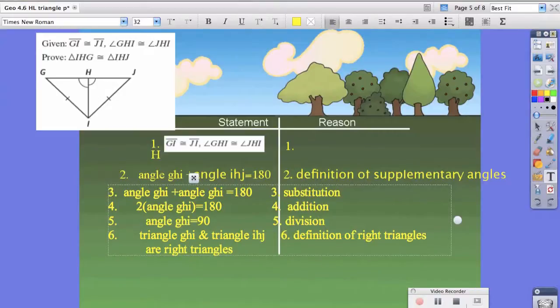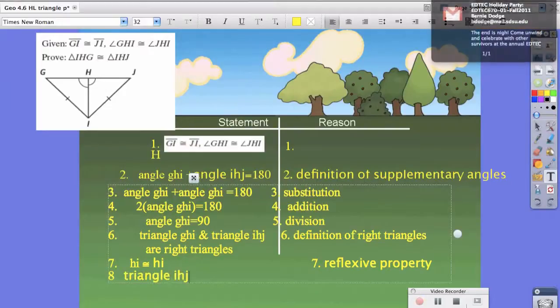Because we can't use the HL theorem until we can say that it is. Now that we have that, we can say that HI is congruent to HI because of the reflexive property. And now we can finally say that triangle IHJ is congruent to triangle GHI because of the HL theorem.